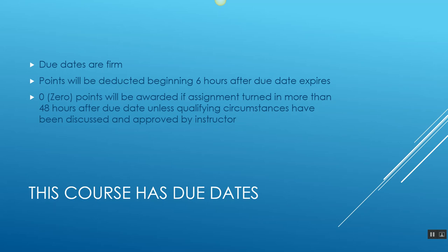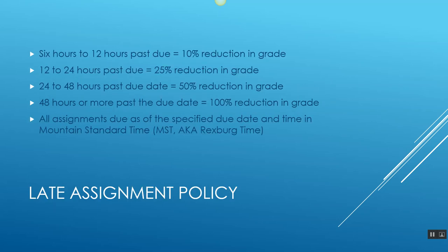This does not include work conflicts. This does not include church callings. Those things we have to be able to plan around. To give you a little bit more breakdown on the late assignment policy: six hours to 12 hours past due, once you submit the assignment there will be a 10% reduction in grade. After 12 hours, 12 to 24 hours past due, there will be a 25% reduction in the grade. From 24 hours to 48 hours past the due date, I'm going to have to mark it down 50%. If your assignment is more than 48 hours past due, you will receive a zero, 100% of your grade will be deducted.